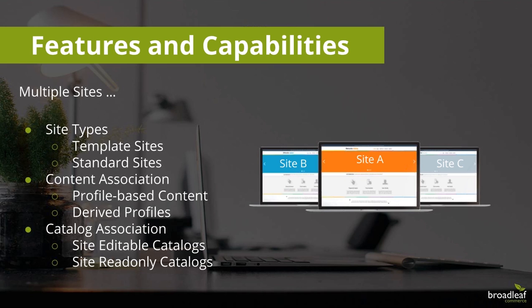From a site level, we have two different types of sites: a template site and a standard site. The template site is similar to template catalogs — it's a foundation point for any commonality you might have within sites. You can set up common themes or content items in a template site, but the template site itself is not a site that customers will visit. It's a way to set up common items that can be shared down to standard sites, which are the sites customers will actually come to.